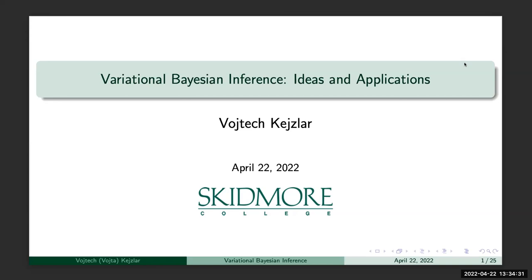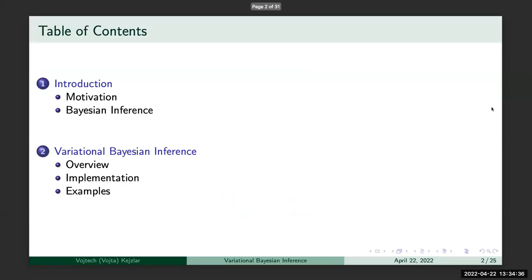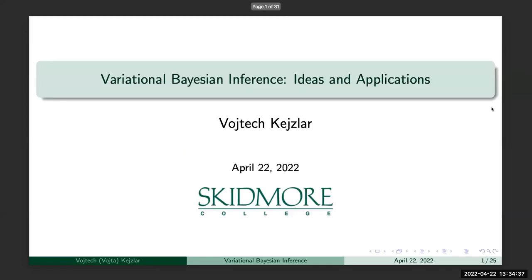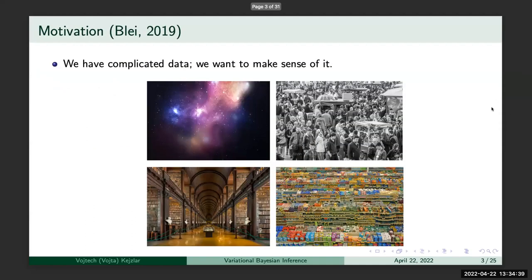You know, all kinds of MCMC methods, but it turns out that for many machine learning applications with complex and big data sets, these methods fail. So we need some sort of different way to approximate posterior distributions, and that's what variational Bayesian inference is about. All right, sound good?